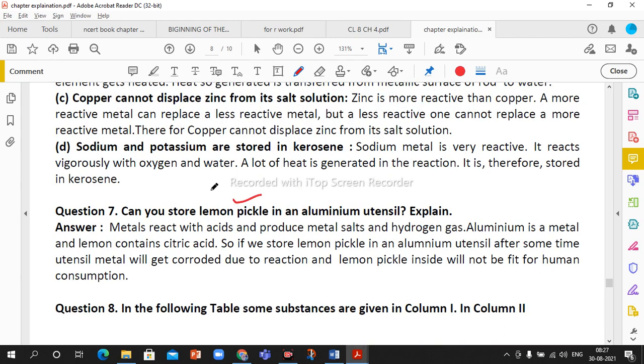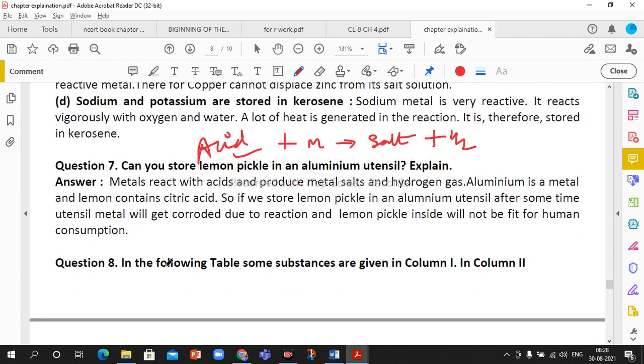Can you store lemon pickle in aluminum utensils? Lemon pickle is a sour substance. Sour substance contains acid. When acid reacts with aluminum, which is a metal, we know what forms? Salt forms and hydrogen gas forms. In this way this hydrogen gas spoils the lemon pickle and this is not good for our health also.